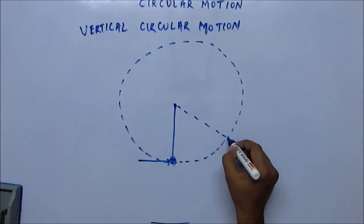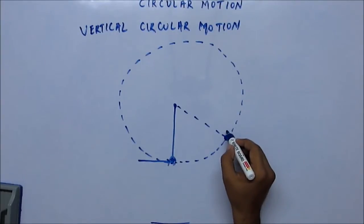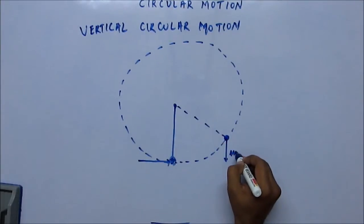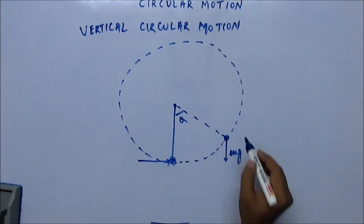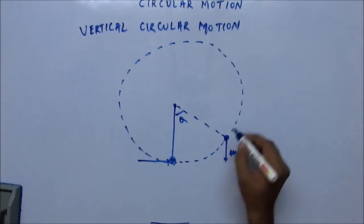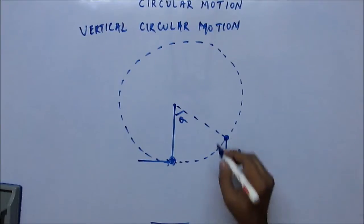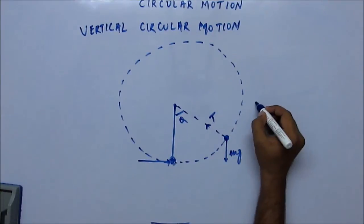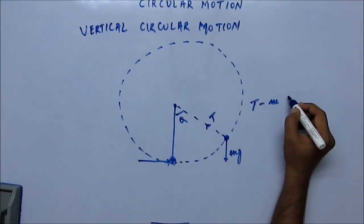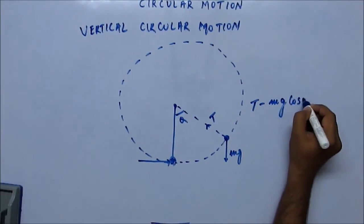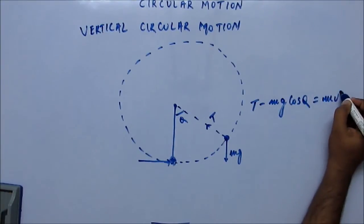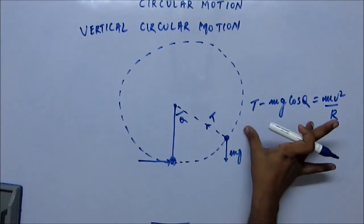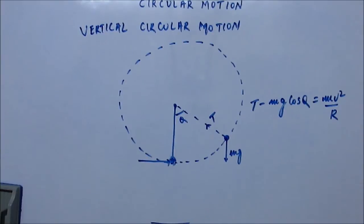At any intermediary stage, consider a situation where the angle from the vertical is theta. If we write the equation for circular motion, there is some tension T acting radially inward and there is mg acting downward. The net force radially inward is T minus mg·cos(theta), and this equals mv²/r. This is the equation for centripetal force.